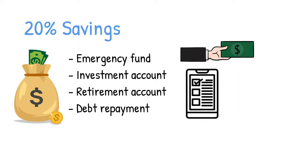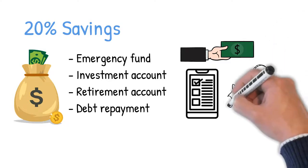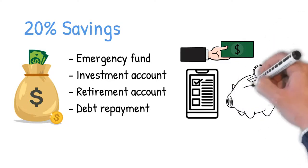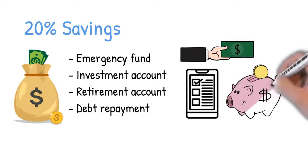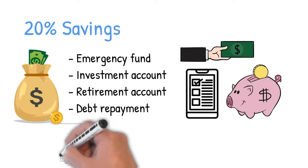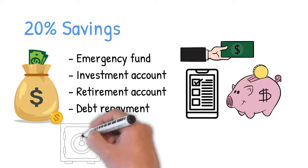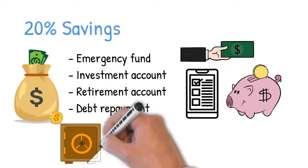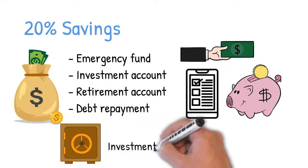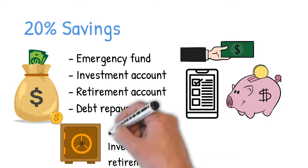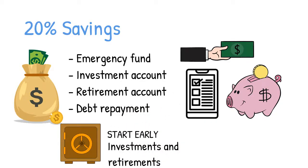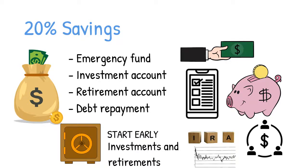Directing money to an emergency fund, for example, covers you against life's emergencies like an illness, a job loss, a car problem, or a leaky roof, just to mention a few. These events are unforeseen, so it's wise to have some money saved up for addressing them. When it comes to investments and retirements, this budgeting rule dictates that you start early. You can put money into an IRA, individual retirement account, a mutual fund, or stocks.